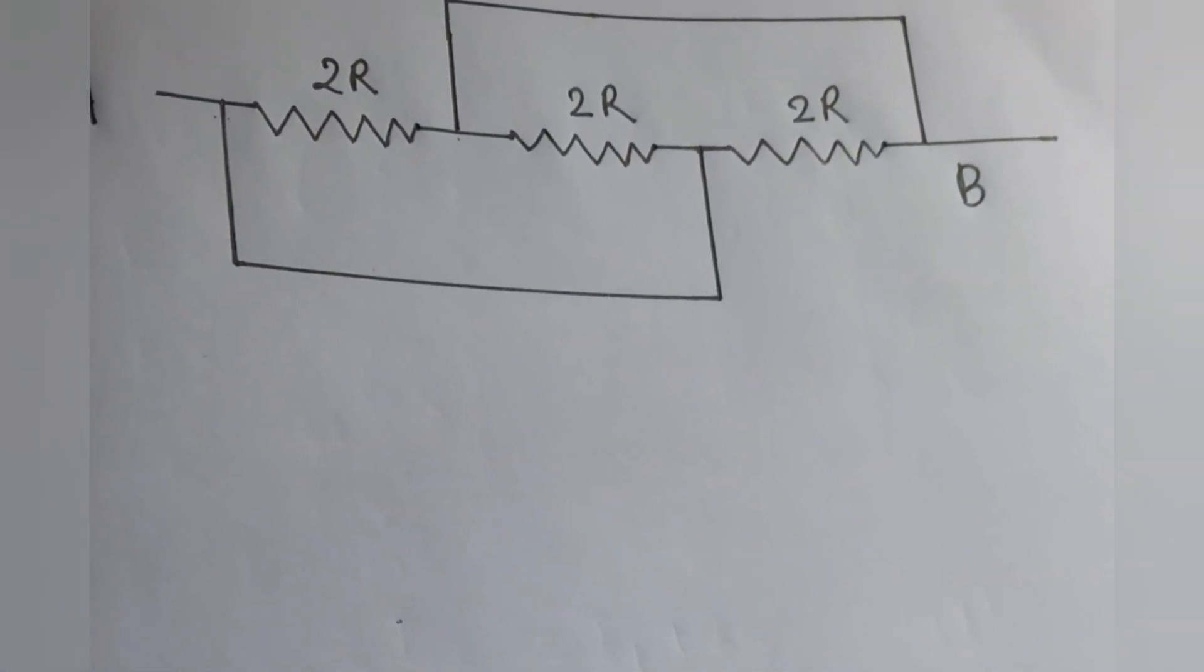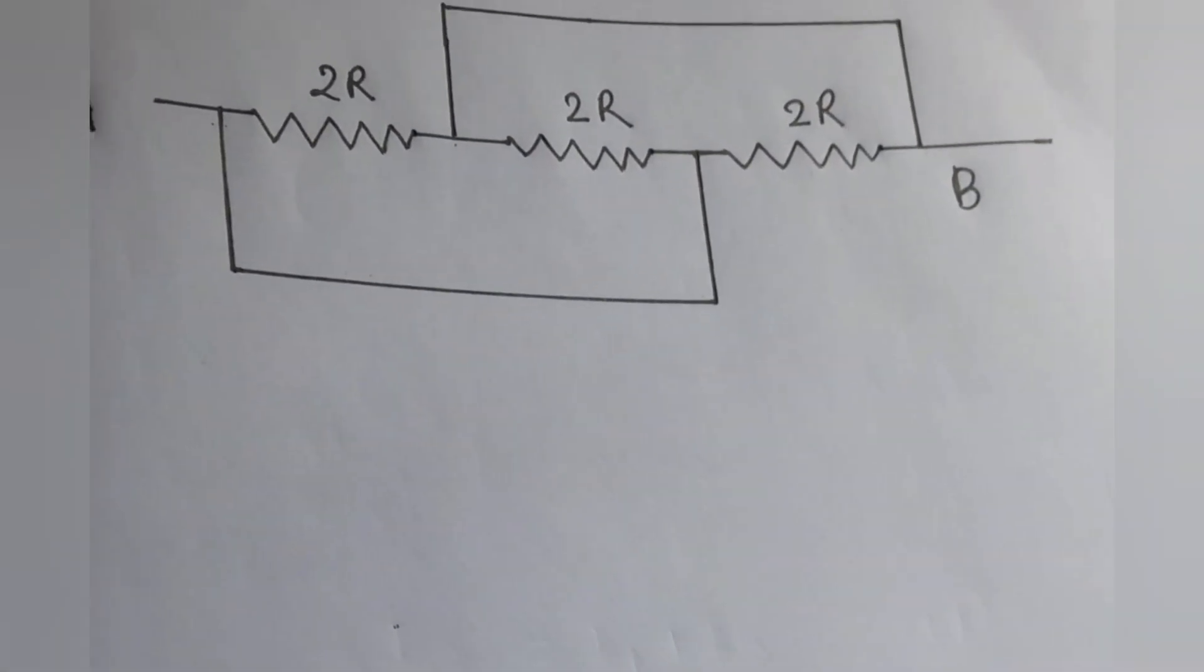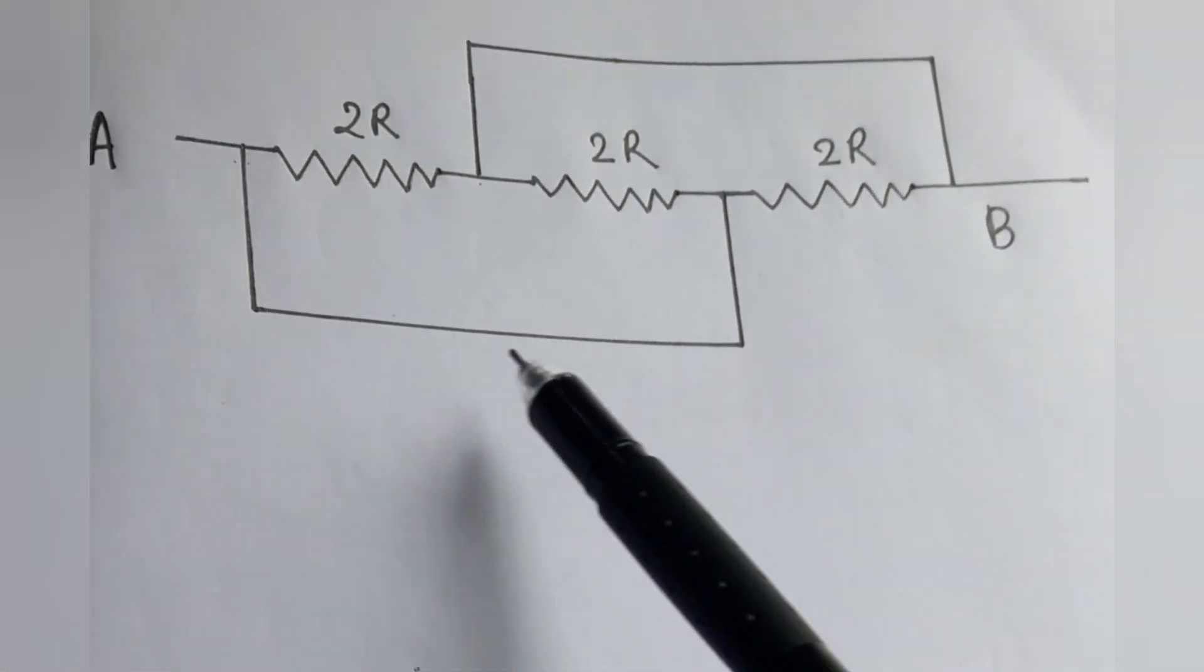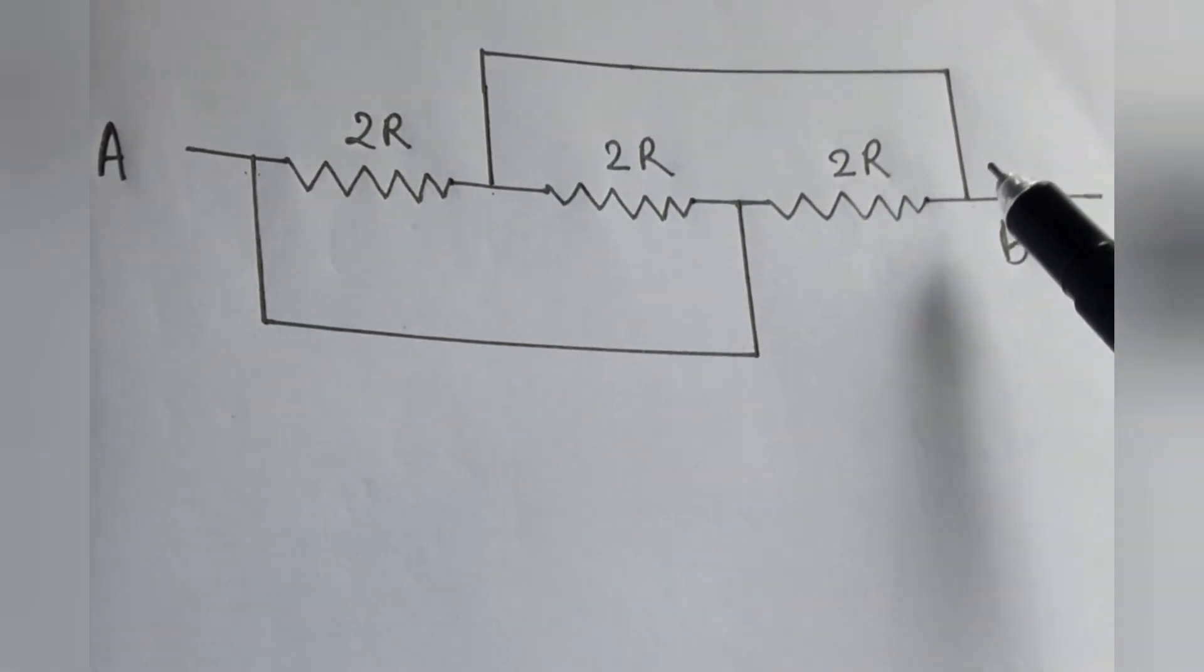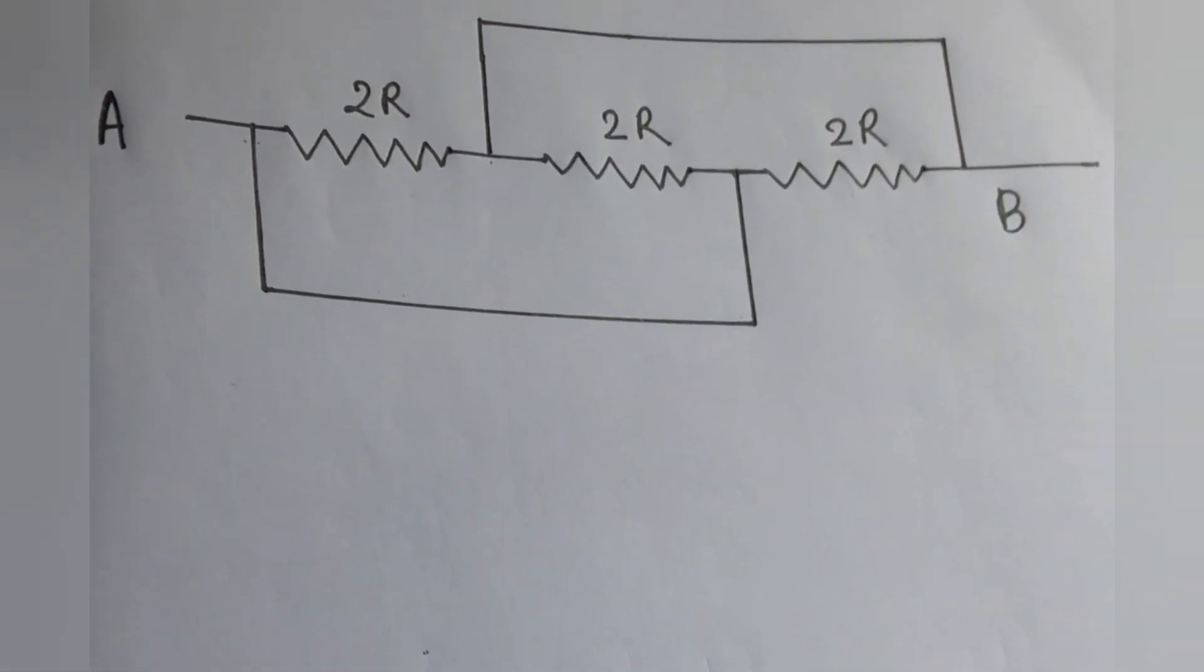You observe that this is a conducting wire having no resistance and this is also a conducting wire having no resistance.